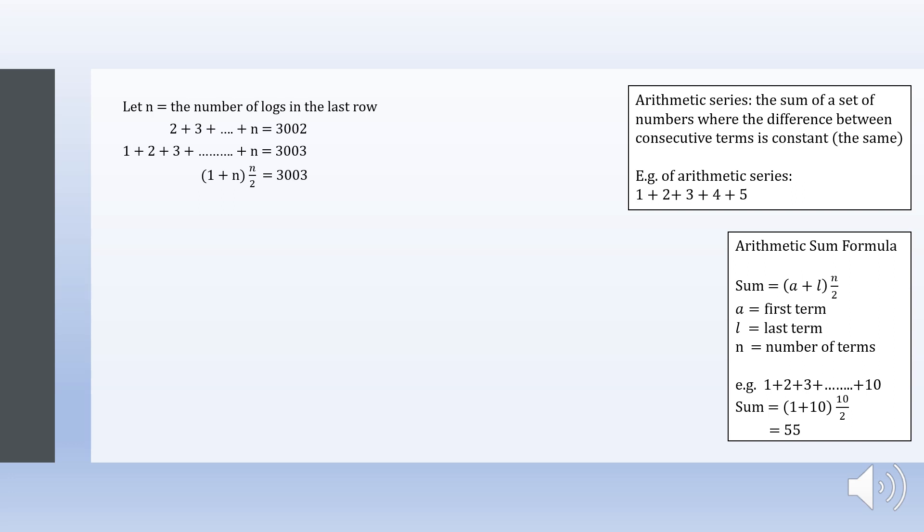Then to simplify this, we times 2 on both sides to get n(n + 1) equals to 6006. n and n + 1 are two consecutive numbers, and they multiply to give 6006.